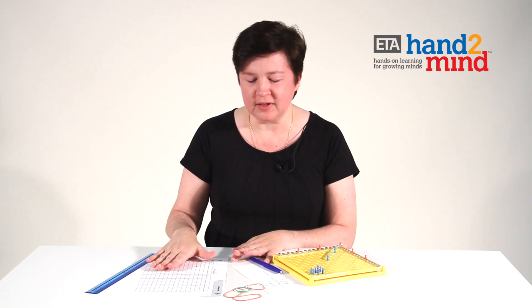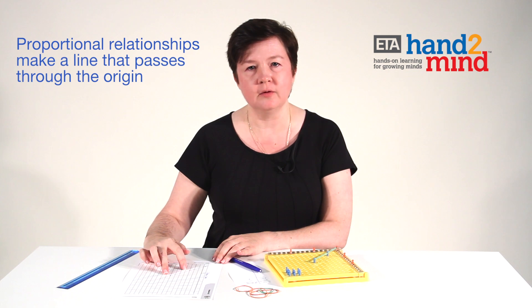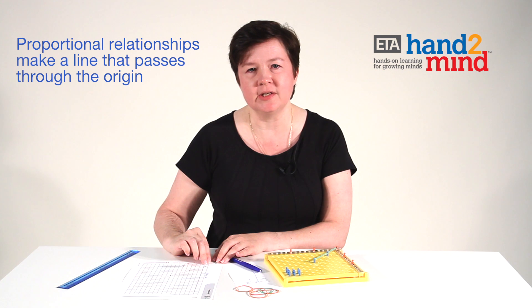We want to have students talk about their line, and I'm going to use an interactive whiteboard representation to guide through that discussion. I know that any two points make a line, so the fact that my two data points made a line doesn't tell me the relationship is proportional. What tells me it's proportional is when I extend that line down and see it passes through the origin — because any two points would make a line, but the question is, does that line travel through the origin? That makes it a proportional relationship.